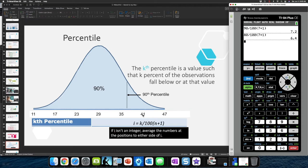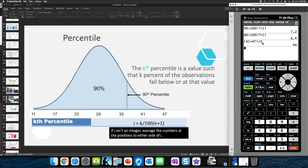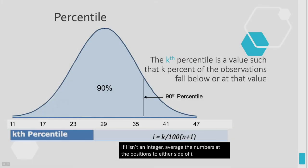Any time you're putting in a fraction that has a complicated numerator or denominator in the calculator, put parentheses around the complicated parts so that it will definitely compute in the order you intend. Those are percentiles and how we can compute them.